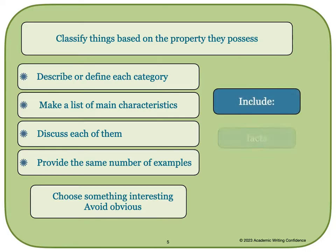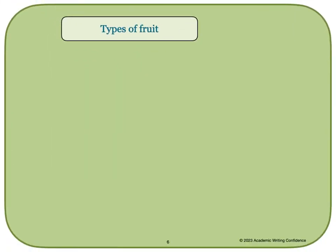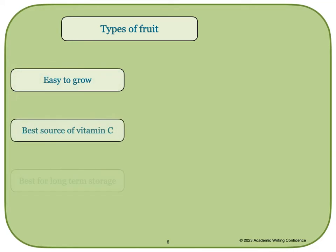You should include facts, examples, and pros and cons about the topic, if appropriate. For example, with the topic of types of fruit, you might choose these three categories: fruits that are easy to grow, those that have the best source of vitamin C, or those that are best for long-term storage.